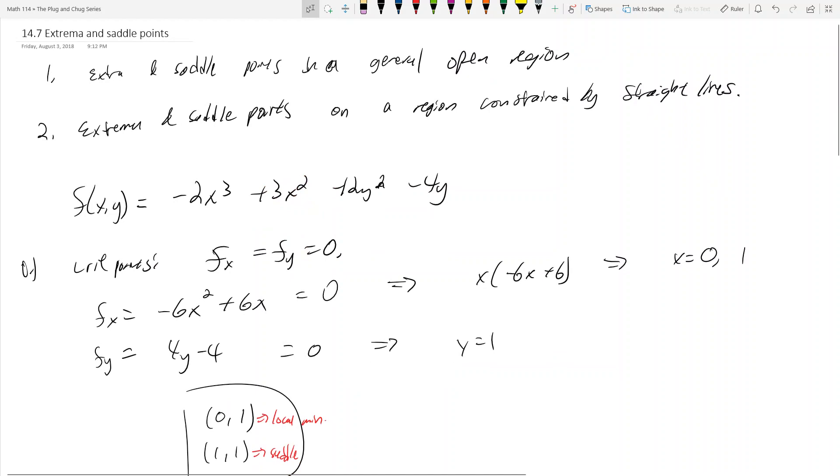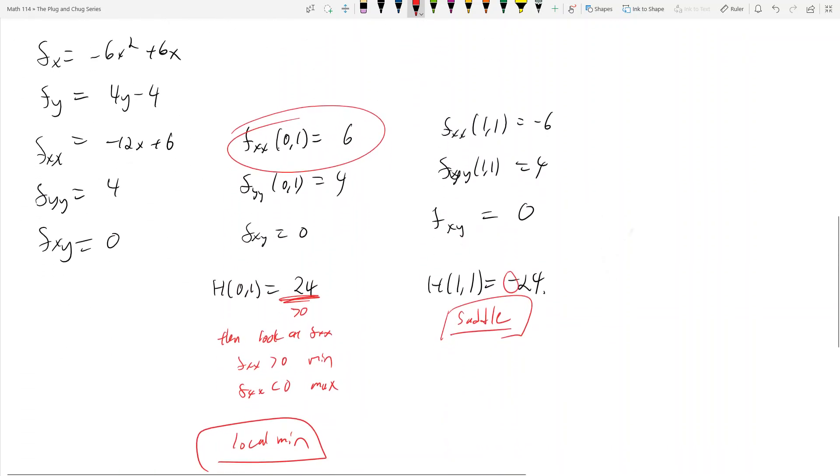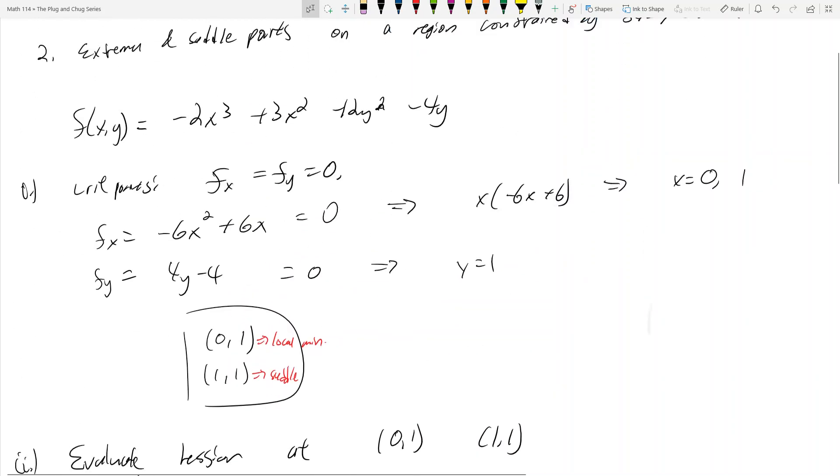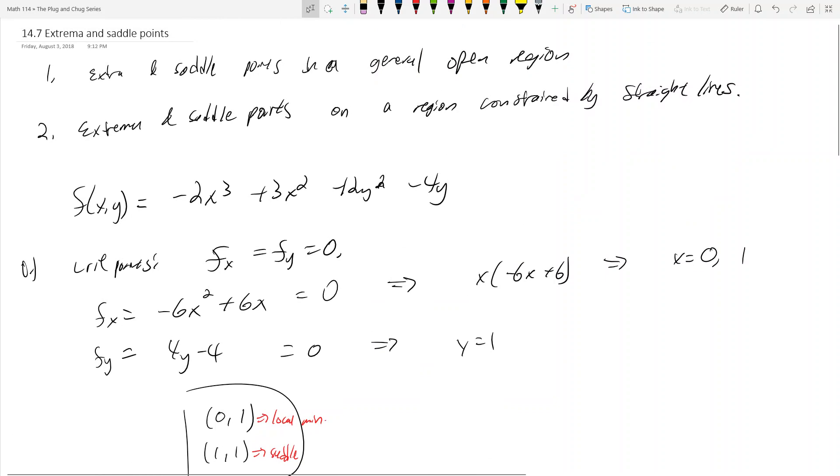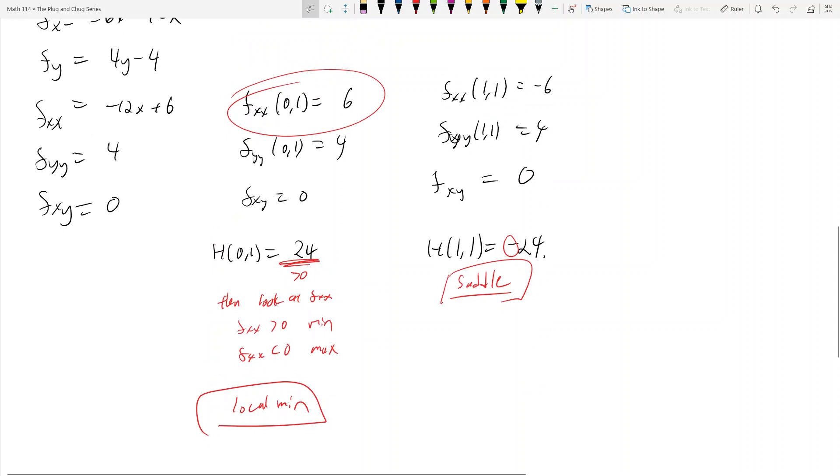And there are no boundaries in this problem. So that's what we're going to consider in the next video. We're going to take a similar problem and we're just going to restrict it into a certain region. And that region is going to be with straight line boundaries, like a triangle or a square. And then we're going to see how we find local mins, local maxes, absolute mins and maxes on those guys.